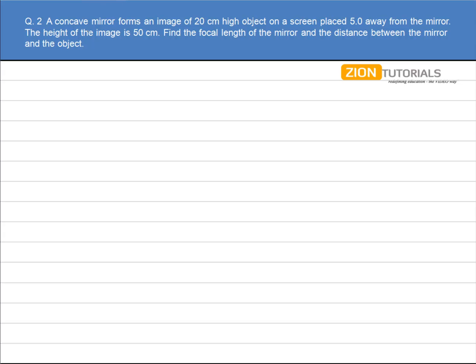A concave mirror forms an image of a 20cm high object on a screen placed 5m away from the mirror. The height of the image is 50cm. Find the focal length of the mirror and the distance between the mirror and the object.